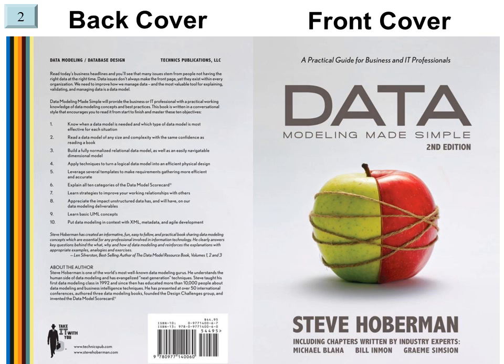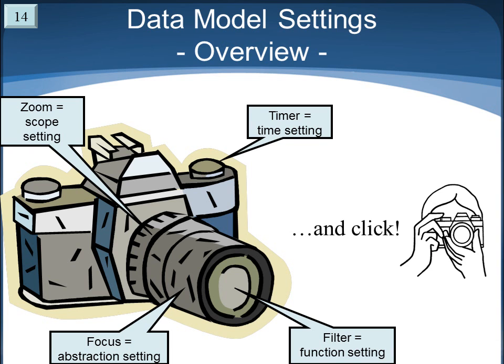Some very interesting discussions come out of this exercise. The second slide introduces the camera analogy, where I talk about four settings on a camera and how each one equates perfectly back to the data model, and also what happens when you actually push the button. Once we have a good understanding of these settings, you can use them to validate any data model — and I'll show you how to do that in class.